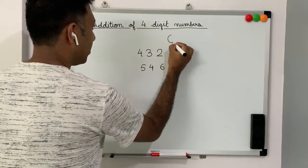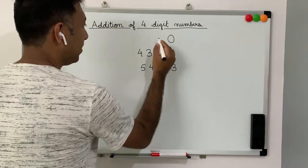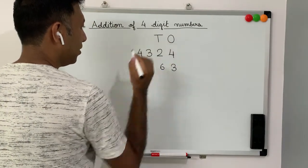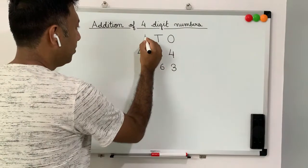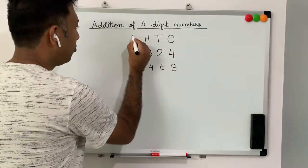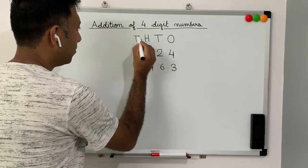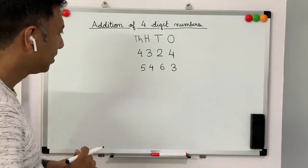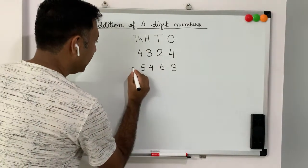This is the ones place, this is the tens, this is the hundreds, and this is the thousands. Then we will add it.